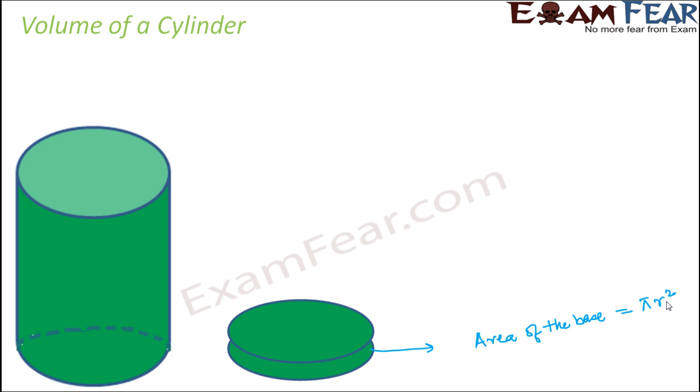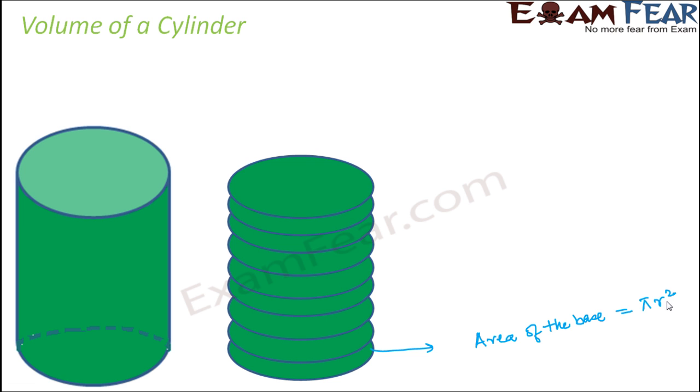Now if you take many such circles and keep stacking them one above the other, you can try this out with coins at your home. Take coins and place them one above the other. What do you get? You finally get a cylinder. So what is happening? This area of the base gets multiplied how many times? It gets added as many times as is the height.